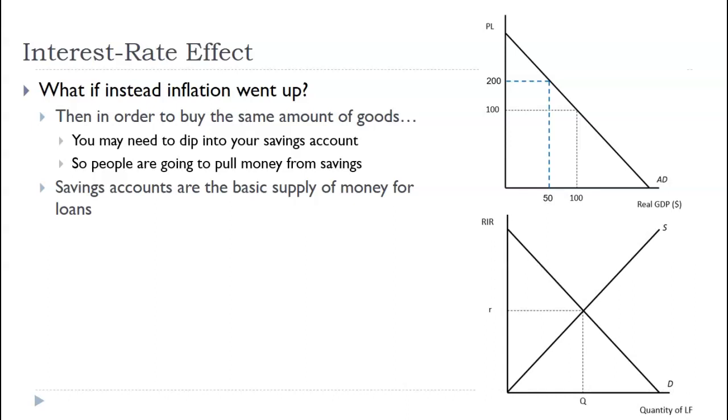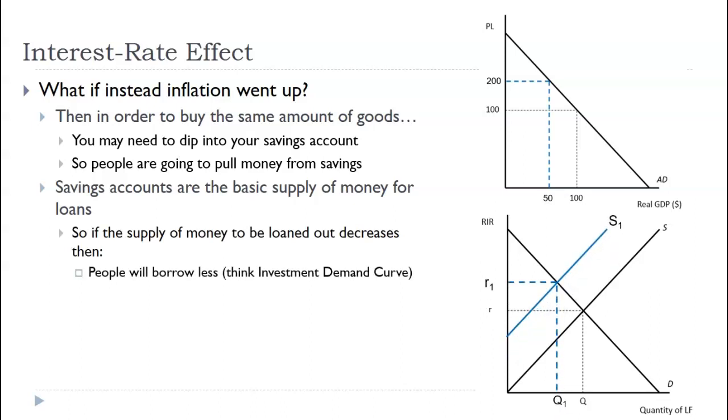So, this is a graph later in class called the loanable funds graph. And so, we have the supply, that's the amount of money available to be loaned out by banks. If people pull money out of their savings accounts, that supply decreases. So, now interest rates increase. So, think of the investment demand curve from previous times. If the interest rates increase, people don't invest as much. They don't borrow as much money. So, what's the conclusion? If the price level increases, there's going to be a decrease in borrowing. Hence, a decrease in real output. So, again, we're talking about the aggregate demand curve downward sloping. So, again, I don't use this as much. Because it starts with assuming the real balance effect is a thing. But it definitely highlights the conversation of causation. If this, then that. If interest rates change, that affects investment spending. And that's something we will definitely spend more time on later.